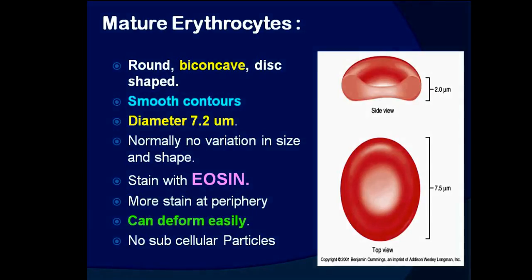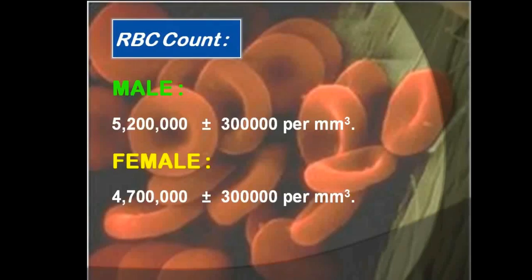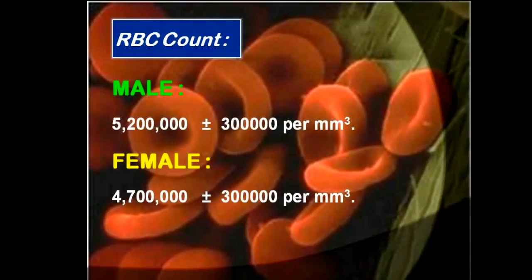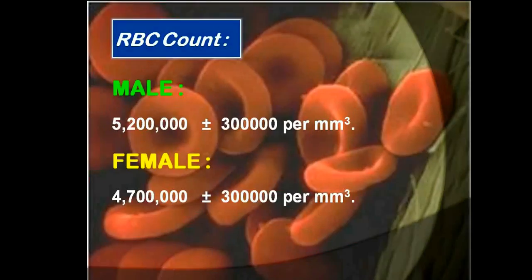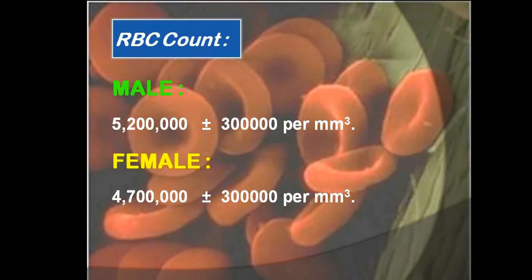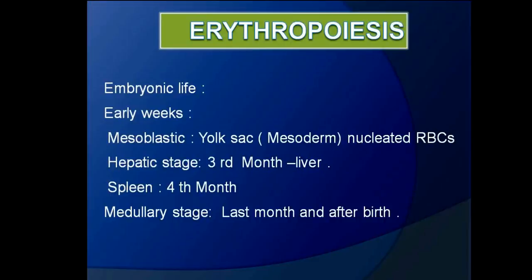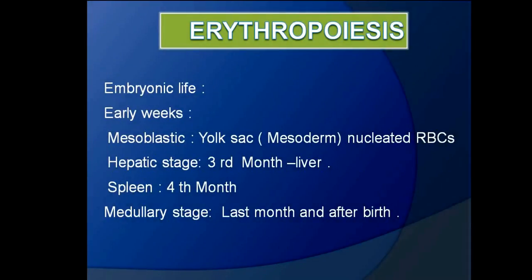RBC count in males is about 5 million per cubic millimeter, while in females it is slightly lower at about 4.7 million per cubic millimeter.